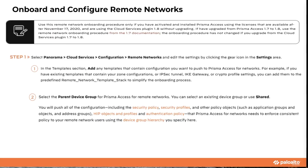Prisma Access is now ready for the Boston location to initiate the VPN tunnel to complete onboarding of the first remote network. Now let's walk through each configuration step in detail. Step one: log into Panorama. Note that for cloud-managed customers, you don't need templates or device groups — you can simply create IPsec tunnels and onboard remote networks directly. You don't need to create parent device groups, templates, or template stacks.